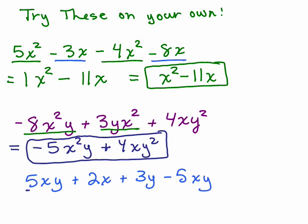I have a 5xy and I'm looking for another xy. I've got a negative 5xy — that's 0xy, and you don't write 0 because 0 times anything is 0. So that term adds up to 0. Then what do I have? I have a 2x plus a 3y — those are completely different — so the answer is just 2x plus 3y.